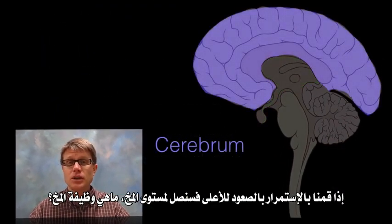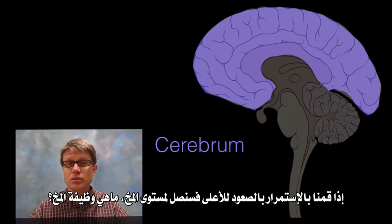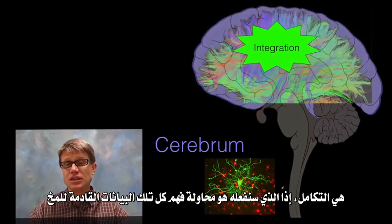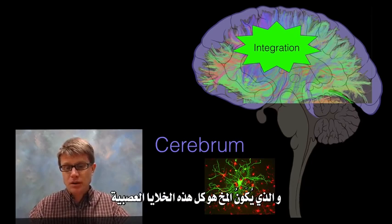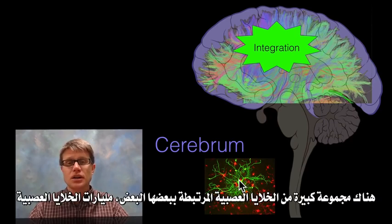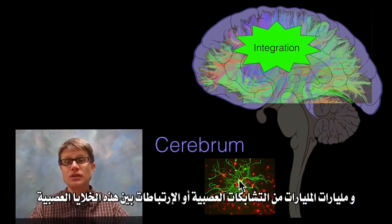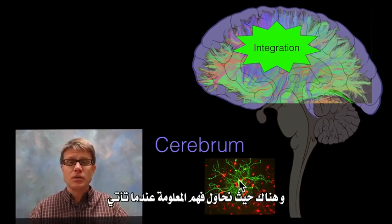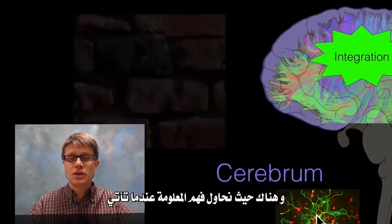Moving up we reach the cerebrum. Its function is integration — making sense of all the data that comes in. The cerebrum is made up of billions of neurons connected by billions and billions of synapses, and that's where we make sense of incoming information.